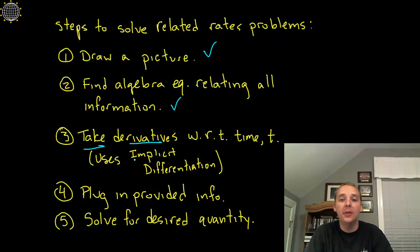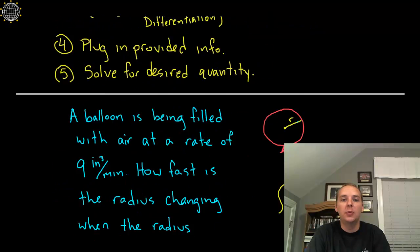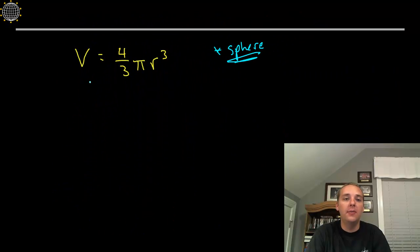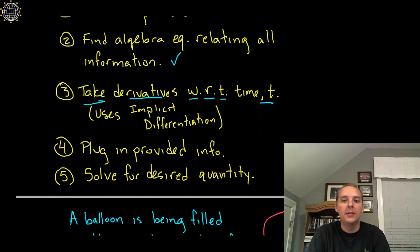Well we're going to take derivatives, that's where we see the motion from, the rate of change by differentiating with respect to time. Now that's going to require some implicit differentiation because we're going to be differentiating the v and the expression with r, not with respect to v or r, but with time, with t.